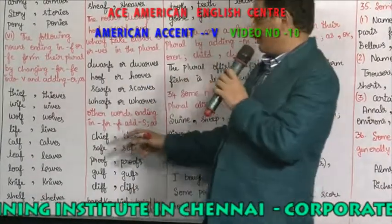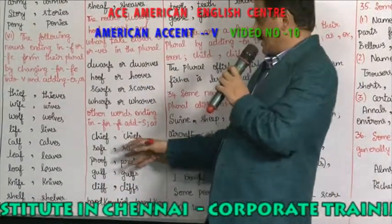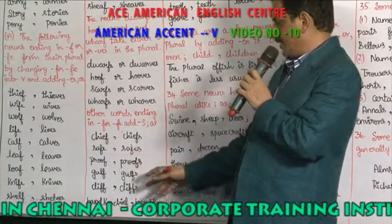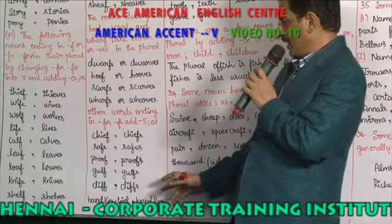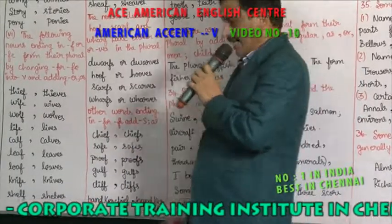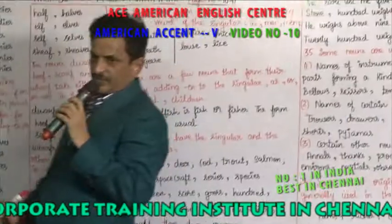Other words ending in F or FE just add S: chief becomes chiefs, safe becomes safe, proof becomes proofs, cliff becomes cliffs, handkerchief becomes handkerchiefs — you just add S.